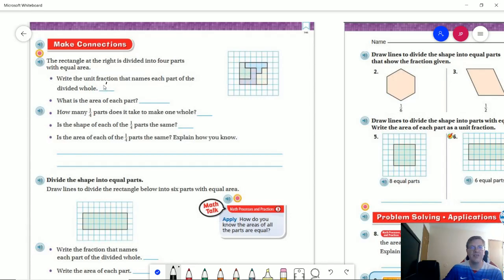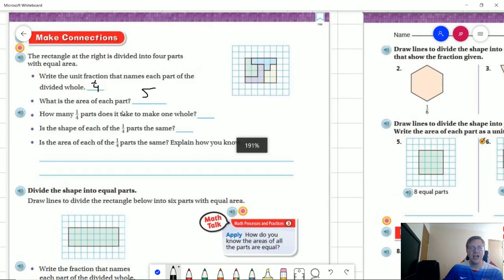So we are going to have a unit fraction of one over four because we have four of those shapes inside. The area of each part is going to be one, two, three, four, five blocks. How many parts does it take that are one-quarter size to make a whole? It would be four. Is the shape of each part the same? No, it's not. And is the area the same? Yes. And the way that we know is we can actually count the blocks and all four of these shapes take up five unit blocks.